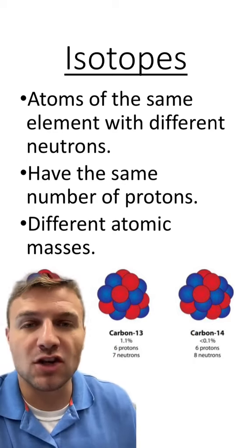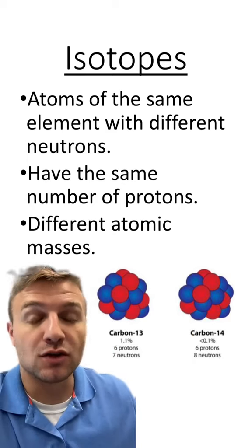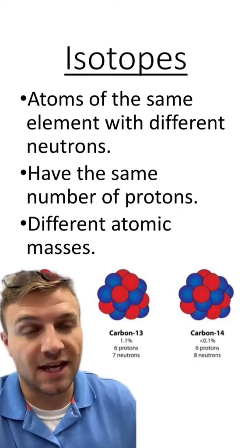So the big thing to remember here is that isotopes are atoms with different numbers of neutrons in the nucleus, but the same number of protons.